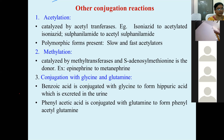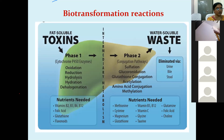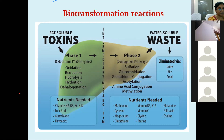Overview: Phase 1 converts fat-soluble toxins to water-soluble waste. The most important Phase 1 enzymes are Cytochrome P450. Processes include oxidation, reduction, hydroxylation, hydrolysis, and hydration. These enzymes require nutritional cofactors — vitamins B2, B3, B6, B12, and folic acid are required for these detoxification processes.